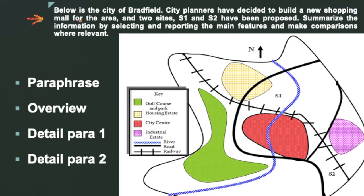Now let's take a look at a map-based question. The question is: 'Below is the map of the city of Bratwell. City planners have decided to build a new shopping mall for the area.' There are two proposed shopping sites, S1 and S2. Summarize the information by selecting and reporting the main features and make comparisons wherever relevant.